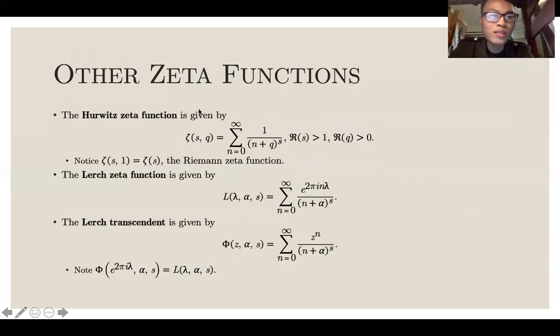There are other types of zeta functions. The Hurwitz zeta function is given by the summation from 0 to infinity of 1 over n plus q to the s. Notice that if you substitute 1 in for q, you get the Riemann zeta function. The Lerch zeta function is an even bigger generalization. Essentially, you replace the numerator 1 with e to the 2 pi i n lambda. And the Lerch transcendent is an even bigger generalization. You replace the numerator with z.